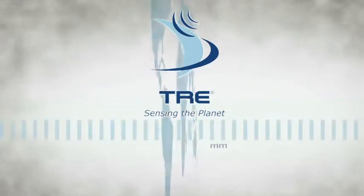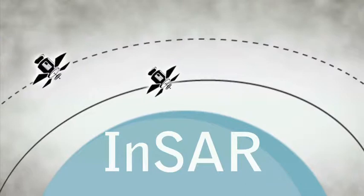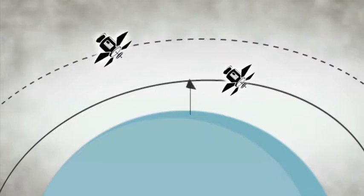We measure these deformations down to a single millimeter, using satellite radar data and a specialized analysis technique called INSAR, which can tell us how much a specific area on the ground has shifted over time.